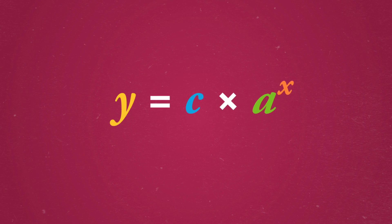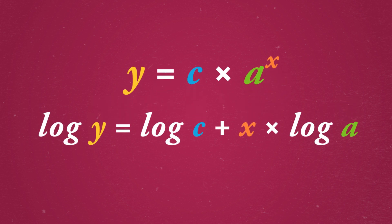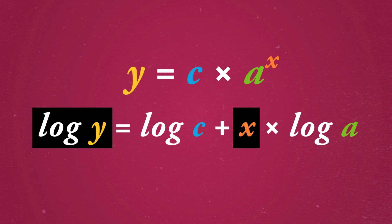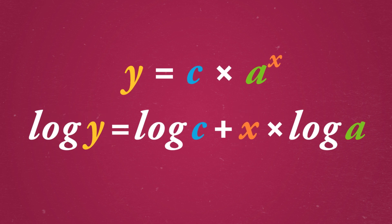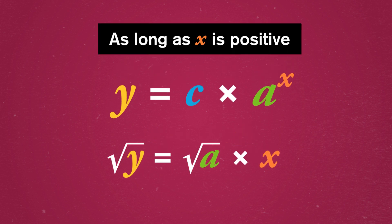But we might be able to use the same tools to find equations of non-linear data if we make some clever transformations. For example, suppose we think data is following an equation of the form y = c · aˣ, an exponential relationship. We can take the logarithm of both sides to get log(y) = log(c) + x · log(a). If we squint a little, it looks like a linear equation with x and log(y) as the variables. Or if we think we have a quadratic function like y = ax² hiding in the data, we can square-root both sides and plot the relationship between √y and x. The trick is to transform the data to flatten the correlation, and then use linear regression again.